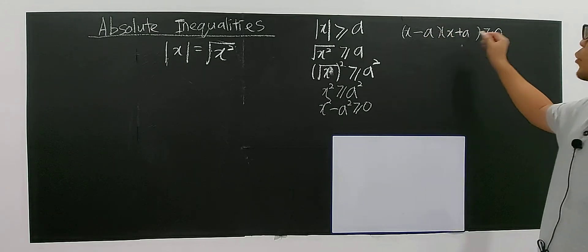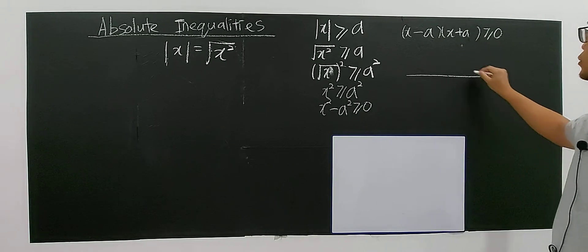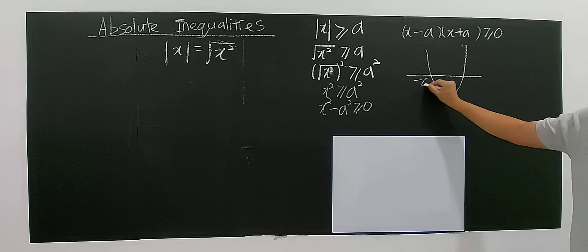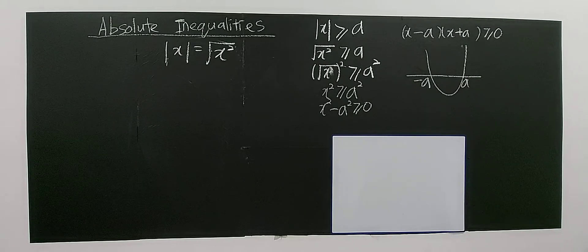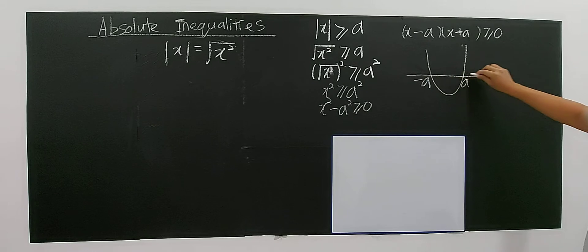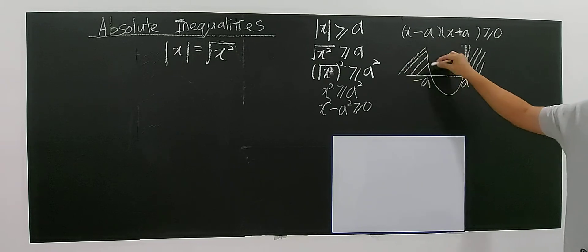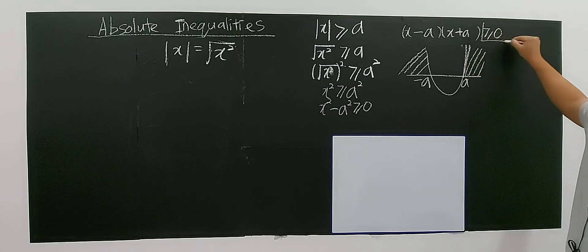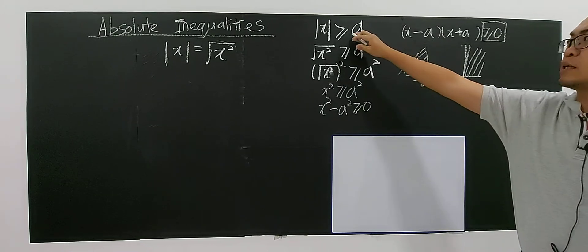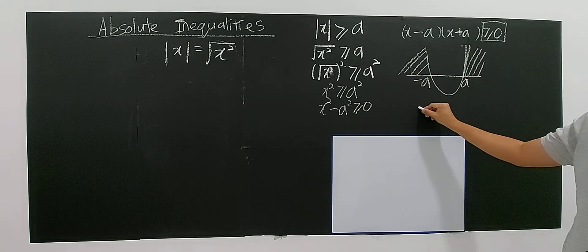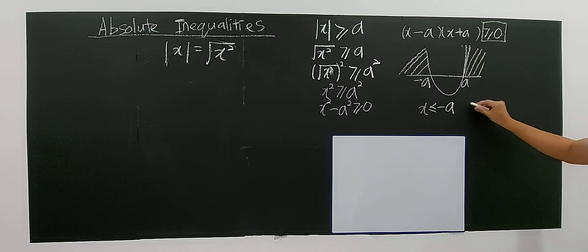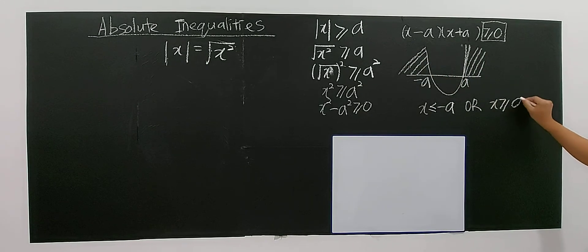This is a quadratic, so I use the graphical method to solve it. On the x-axis I place negative a and positive a as the roots. For the inequality greater than or equal to zero, I look at the regions where the y-value is positive — that is, above the x-axis. Those regions give the solution: x less than or equal to negative a, or x greater than or equal to a.